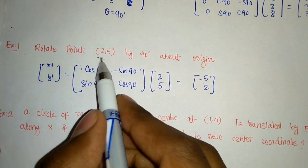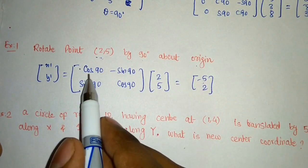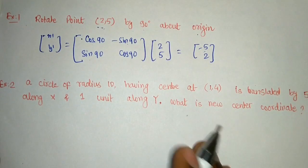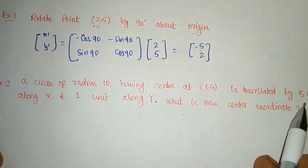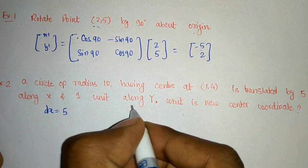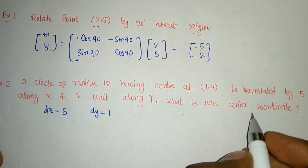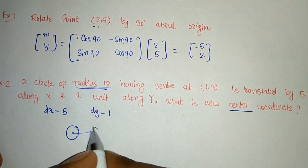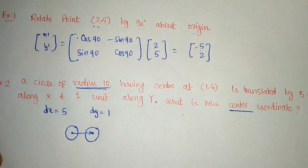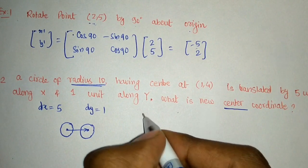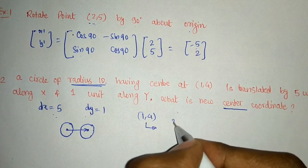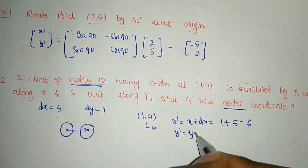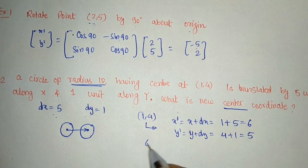If we have a point (2, 5) and want to rotate it by 90 degrees about the origin, we apply [[cos 90, minus sin 90], [sin 90, cos 90]] to the coordinates, giving (minus 5, 2). Another question: a circle of radius 10 with center at (1, 4) is translated 5 units along x (dx equals 5) and 1 unit along y (dy equals 1). We need the new center coordinates. x new equals 1 plus 5 equals 6, and y new equals 4 plus 1 equals 5, so the new center is (6, 5).